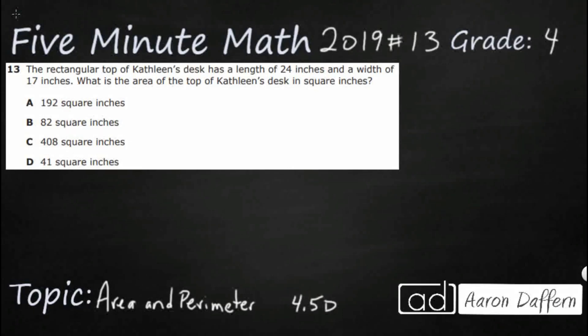Hello and welcome to 5-Minute Math. Today we are looking at the fourth grade concept of area and perimeter. This is standard 4.5D in the great state of Texas and we are using item number 13 of the 2019 released STAAR test.